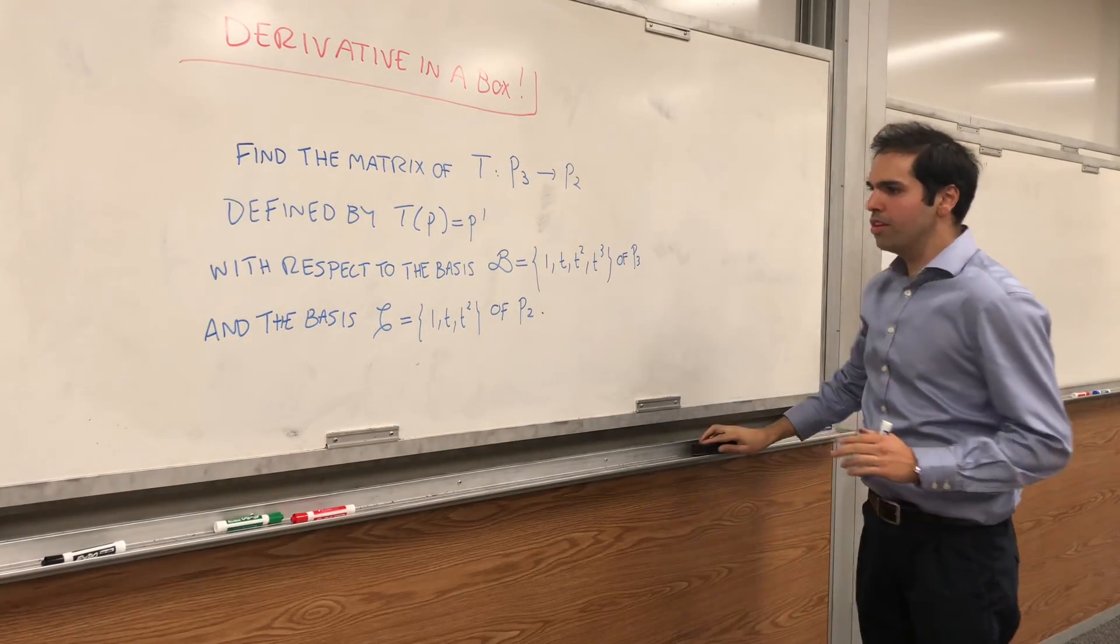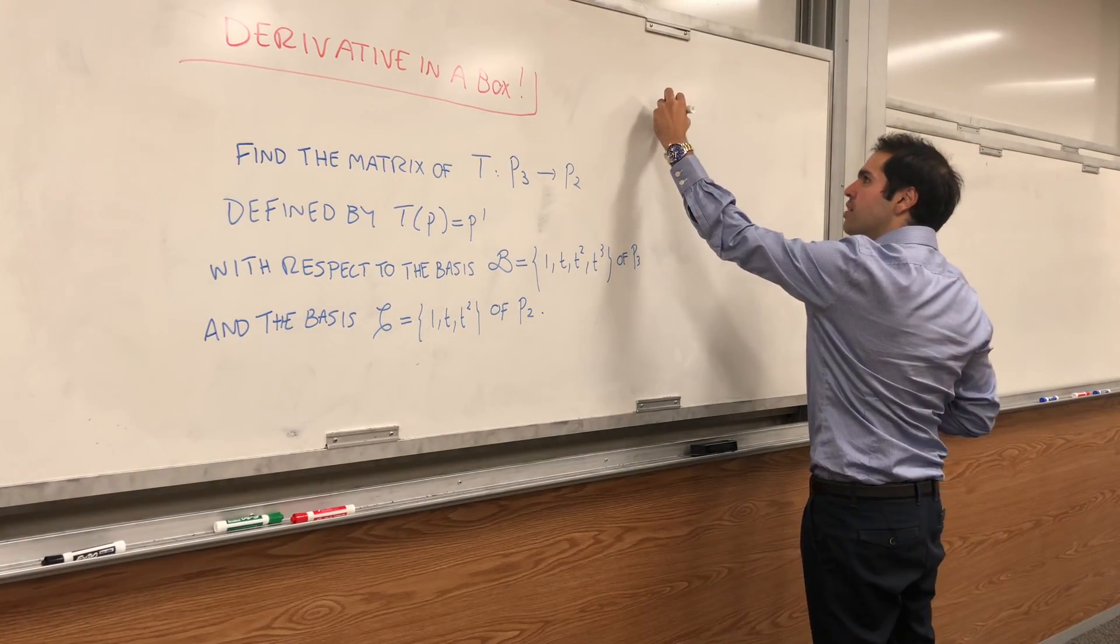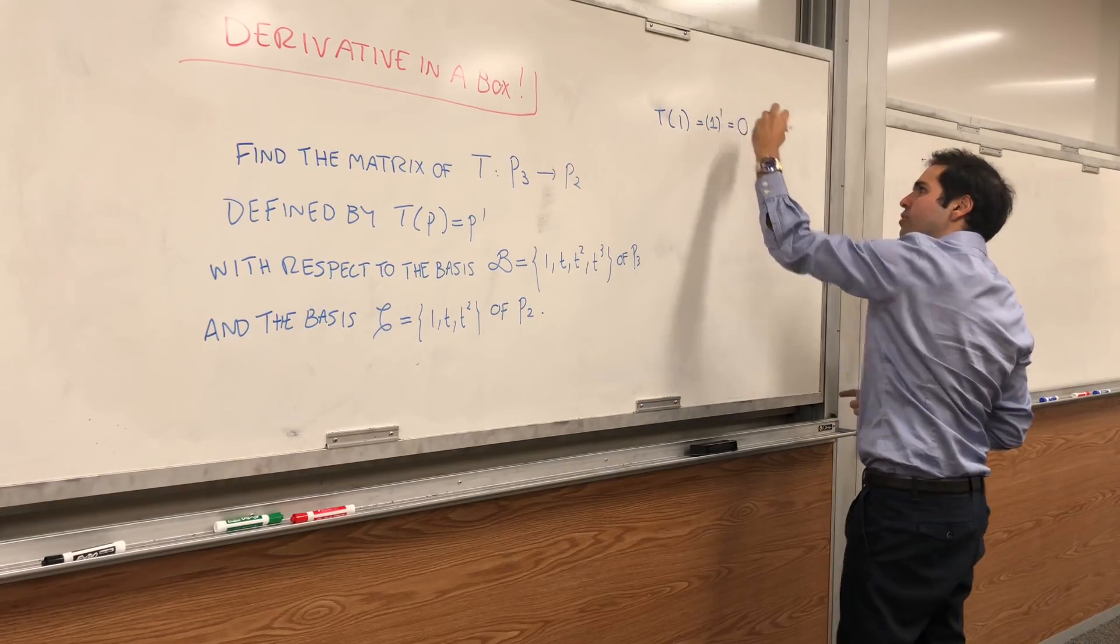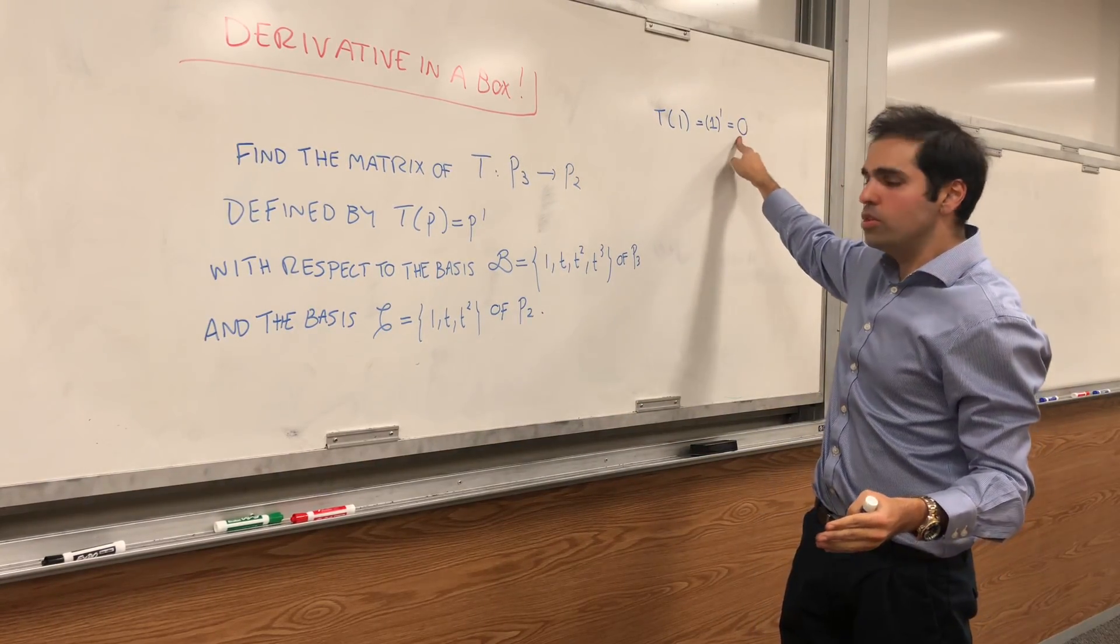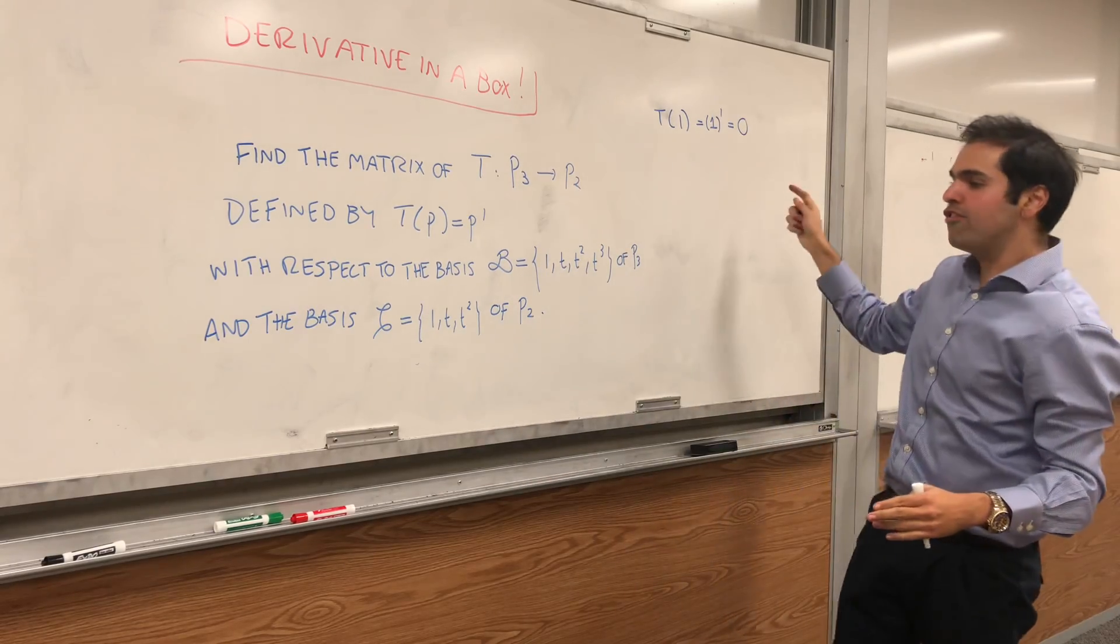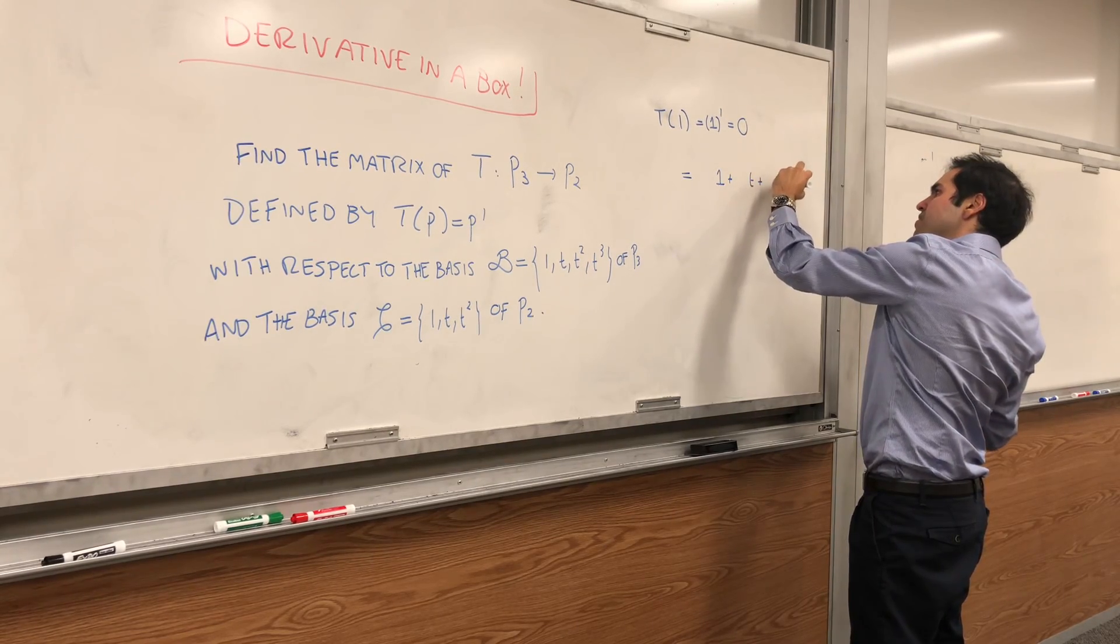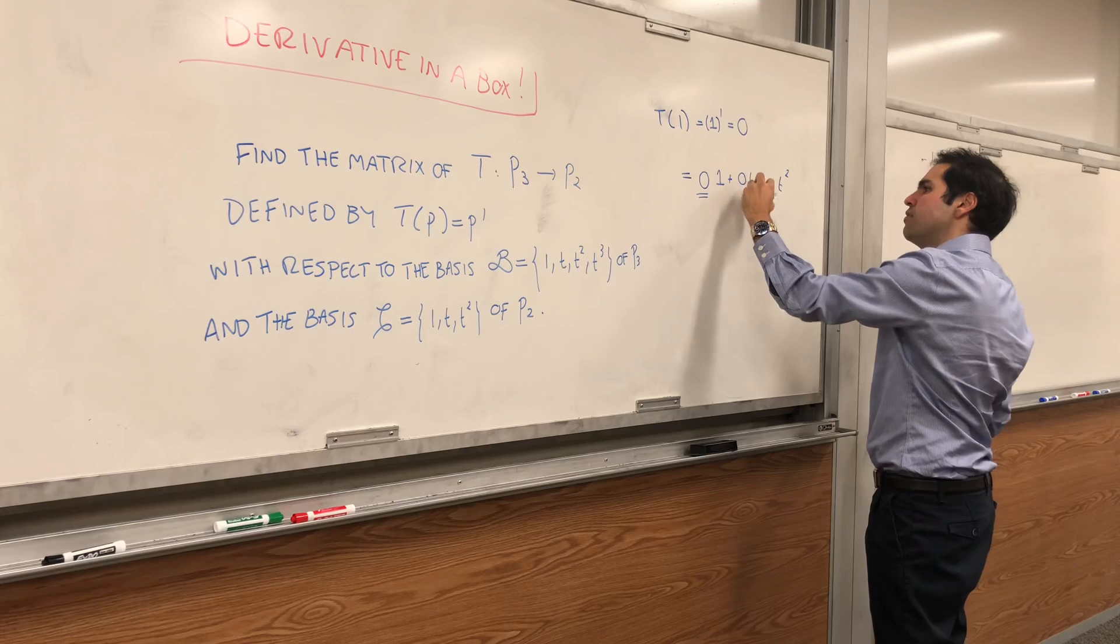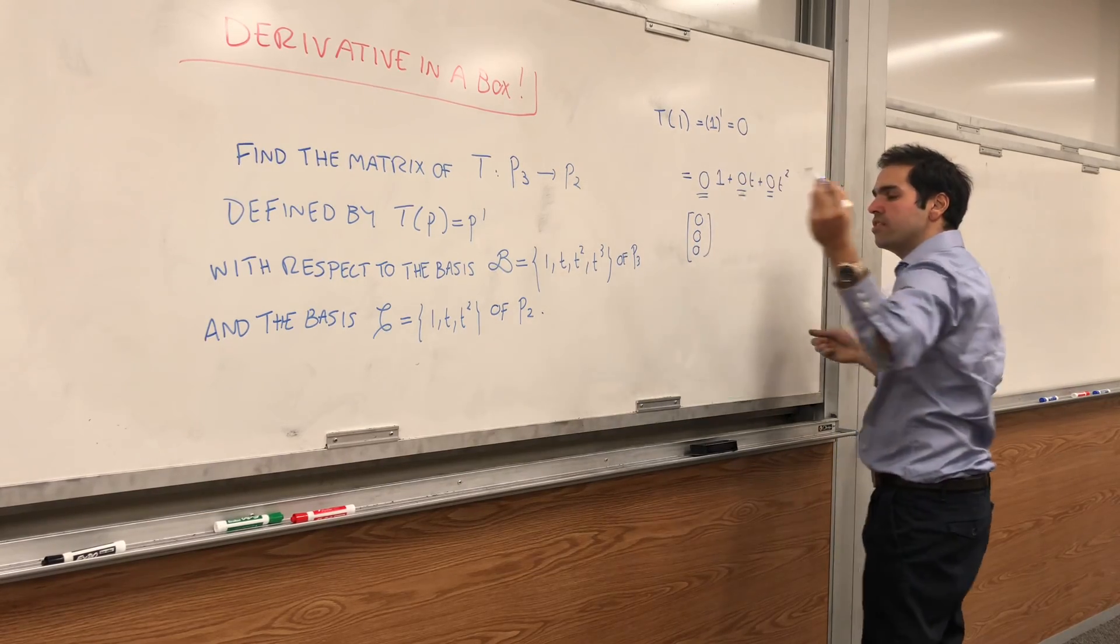It's the same thing as usual. For every vector in the input basis, you calculate T of that vector. So let's calculate T of the polynomial 1. Well, it's 1 prime, and that's 0. But you need to express it in terms of the output basis C. So that's 0 times 1 plus 0 times t plus 0 times t squared, which tells you the first column of your matrix is just 0, 0, 0.